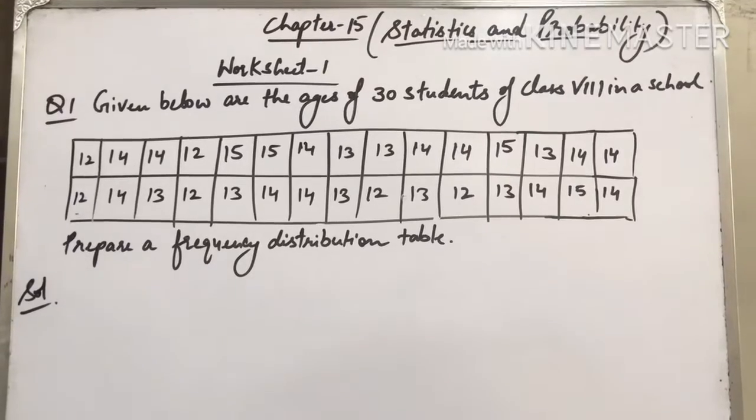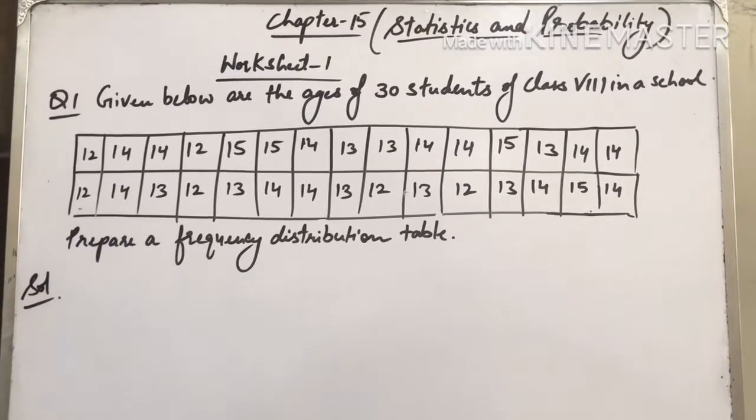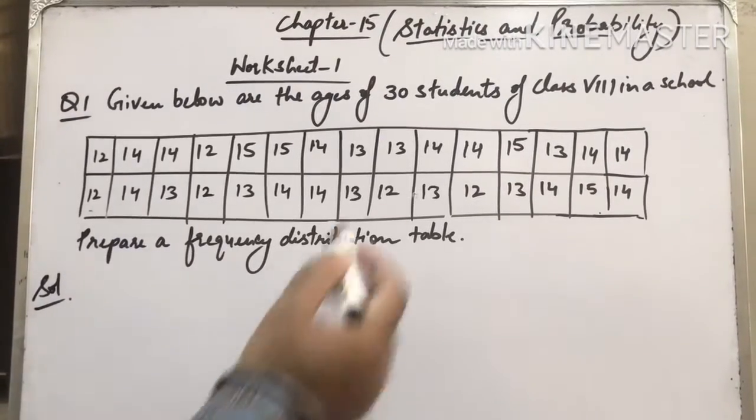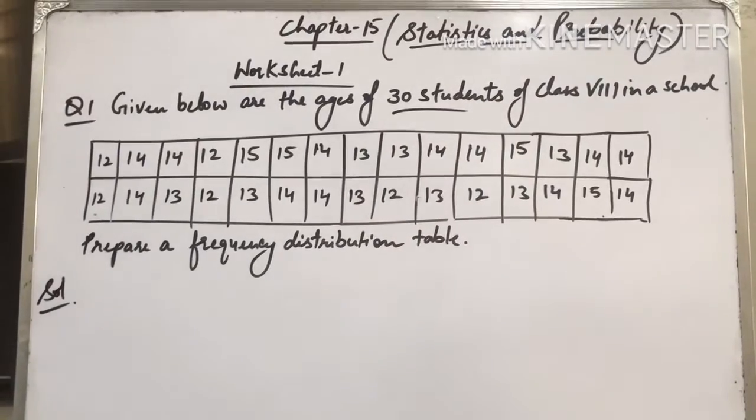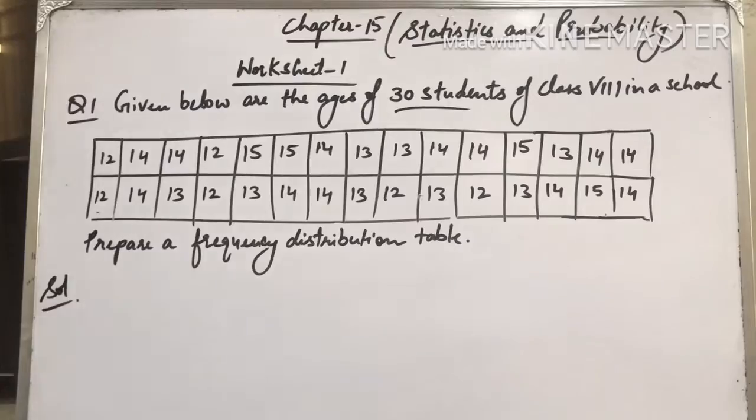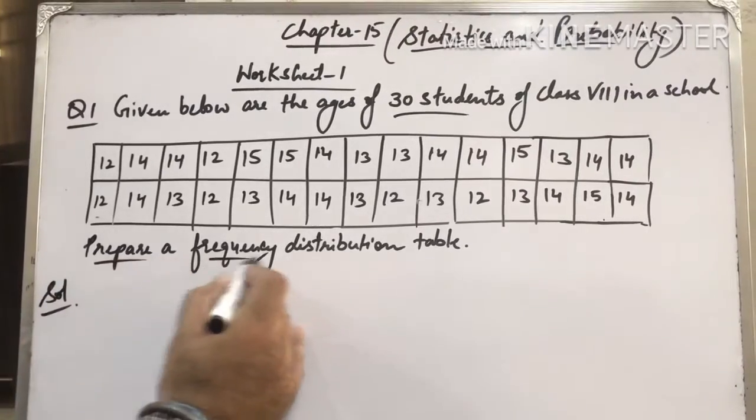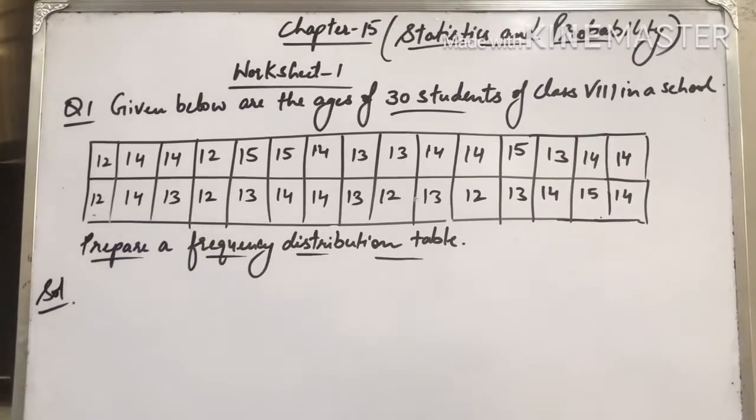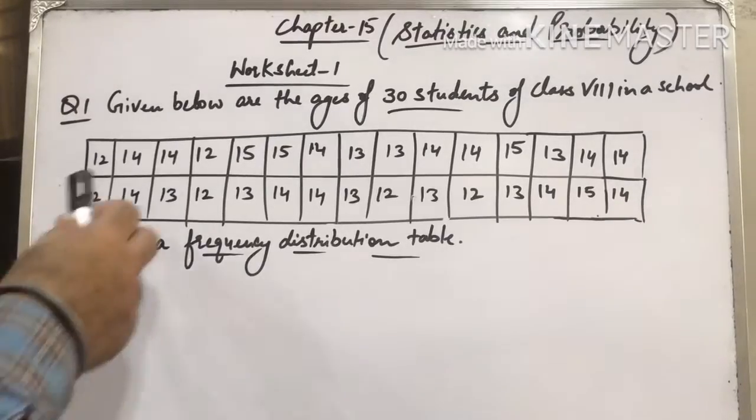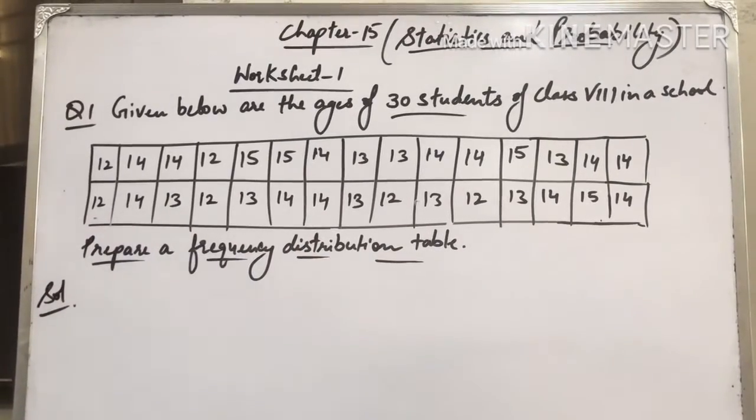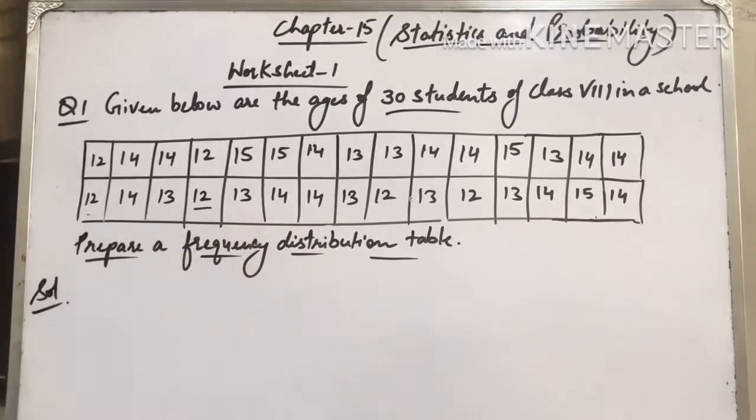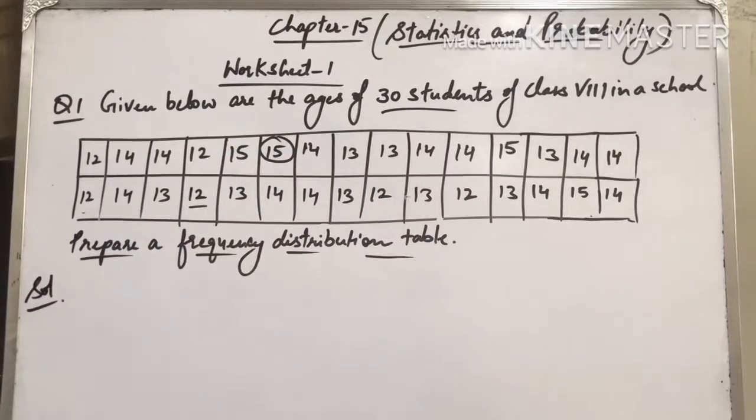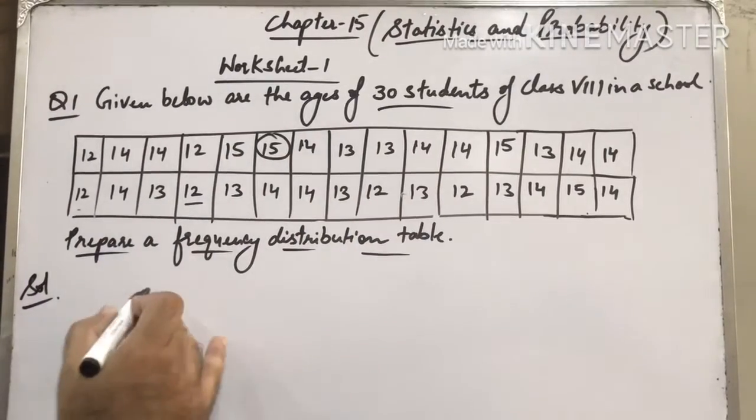Let us consider some examples. We are doing question number 1 of worksheet 1. Given below are the ages of 30 students of class 8 in a school. You need to prepare a frequency distribution table. You can see the range in the table—what is the smallest value? Yes, 12. And the largest value? 15. So clearly 12 to 15. When I make a table, my first column will be the ages: 12, then 13, 14, and 15—four values.